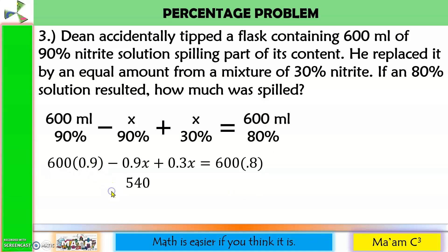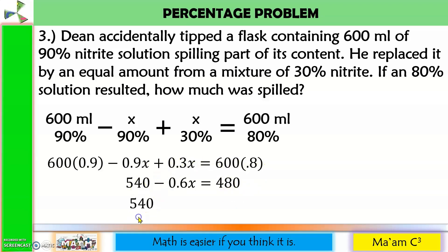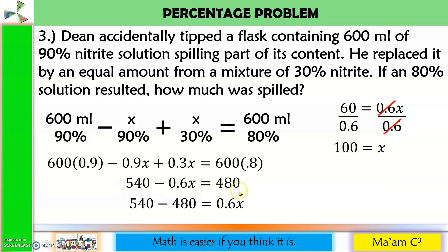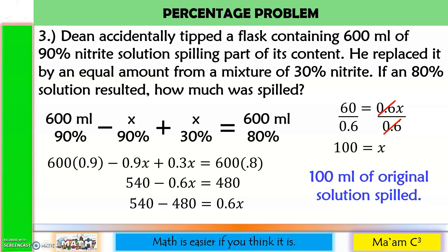600 times 0.9 is 540. Negative 0.9X plus 0.3X is negative 0.6X. 600 times 0.8 is 480. Moving terms: 540 minus 480 equals 0.6X, so 60 equals 0.6X. Dividing both sides by 0.6: X equals 100. You may substitute 100 to verify this equals 480. Therefore, there was 100 ml of original solution spilled.